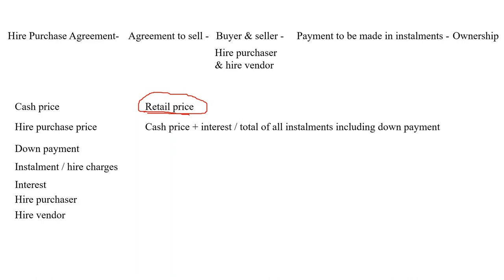What is hire purchase price? The hire purchaser does not make payment immediately — he pays in periodical installments. For this delay in payment, the seller charges an additional amount called interest. So cash price plus interest equals the hire purchase price. To calculate hire purchase price: add all the installments paid by the buyer, including down payment. Down payment plus all installment amounts gives you the hire purchase price. The difference between hire purchase price and cash price is interest.